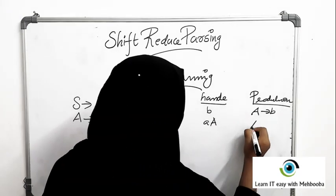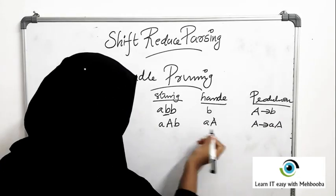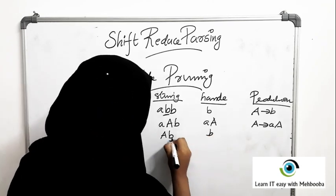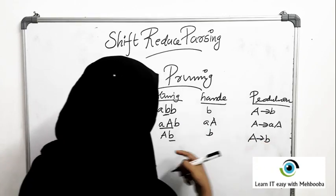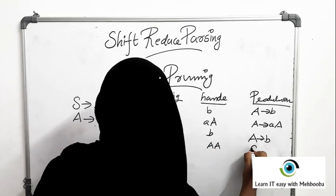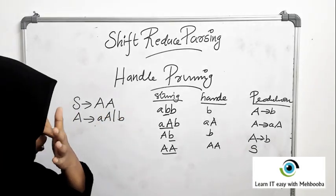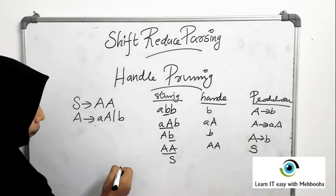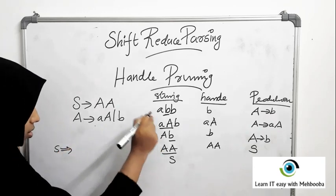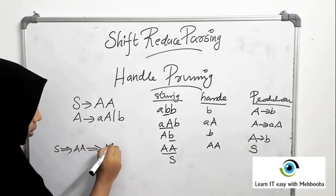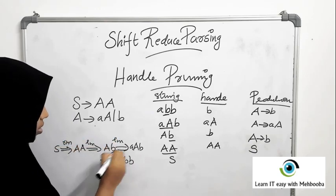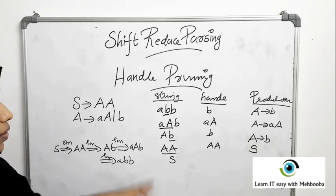Now you replace this b by A, so you get A A b. Now A A is a handle; the production is A gives A A. You replace A A by A, getting A b. Now A is not a handle but b is, so b is a handle with production A gives b. Replacing b by A gives A A, and A A is a handle with left-hand side S. So you get S — that is the rightmost derivation in reverse: S derives A A, A A derives A b, A b derives A A b, and that derives a b b.